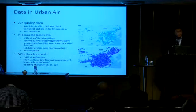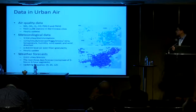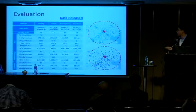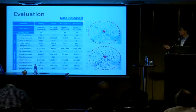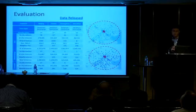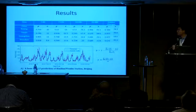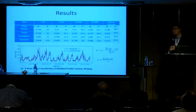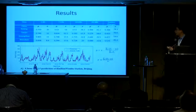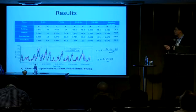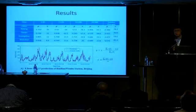So we evaluate our approach on data collected from our real system — it's quite a lot of data. We release the datasets; you can download the data from the link in the paper. This is the results: we evaluate in five cities in China in the paper, but now we have deployed in 61 cities. This shows the ground truth — the black line is the prediction and the red line is the ground truth. They are quite accurate. In terms of accuracy, in Beijing we can achieve 75% accuracy — so if the ground truth is 100, the prediction is 75, and accuracy is 75%. It's pretty accurate.